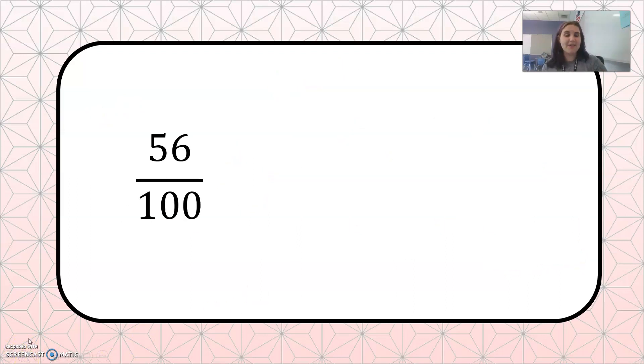How could we write 56 hundredths? So it's always good practice to put your 0 first, 0 point. And then hundredths is two numbers after the decimal. So 56, 56 hundredths.